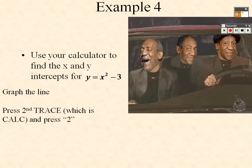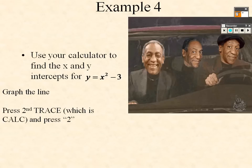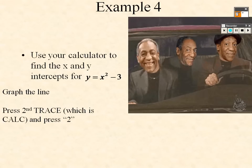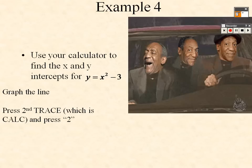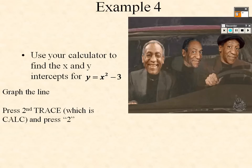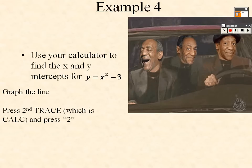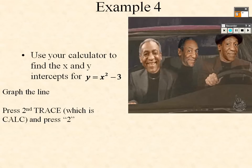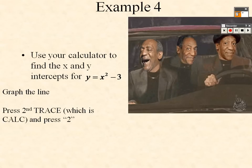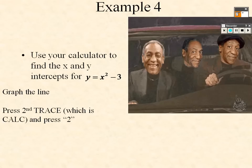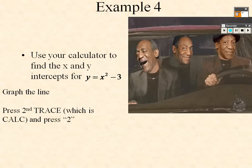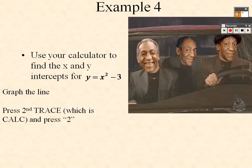Press the X/T/θ/n button, then squared, which is above the log key, then minus 3, and press Graph. To find the x-intercepts, press Second, then Trace (which is Calc), and go down to option 2, which is Zeros.